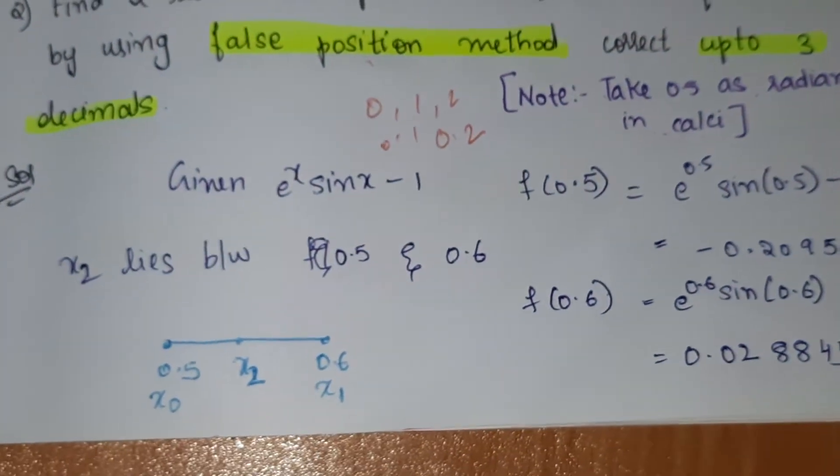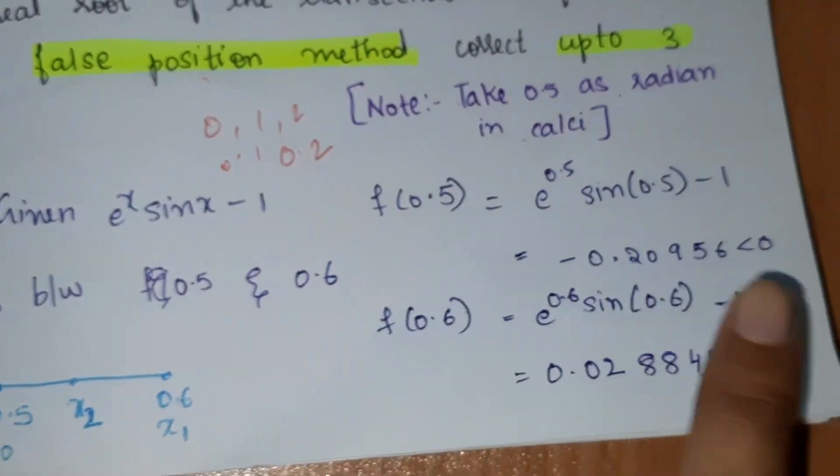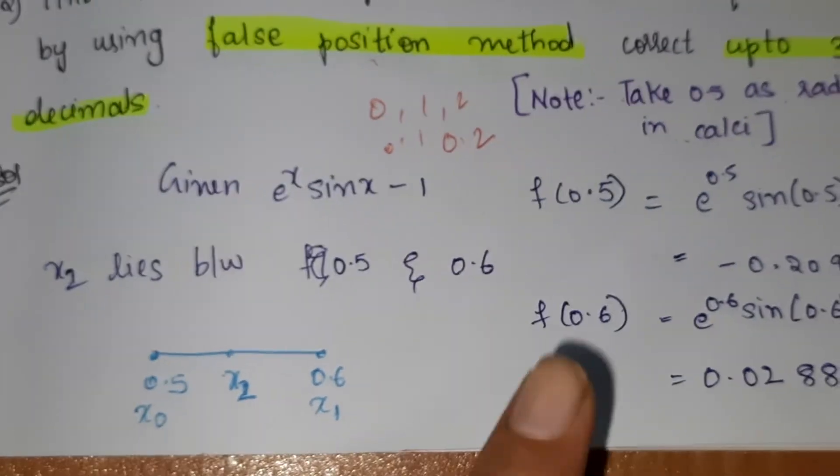Now we got 0.5 and 0.6. We find f of 0.5, which gives negative, and f of 0.6. So x2 lies between 0.5 and 0.6.